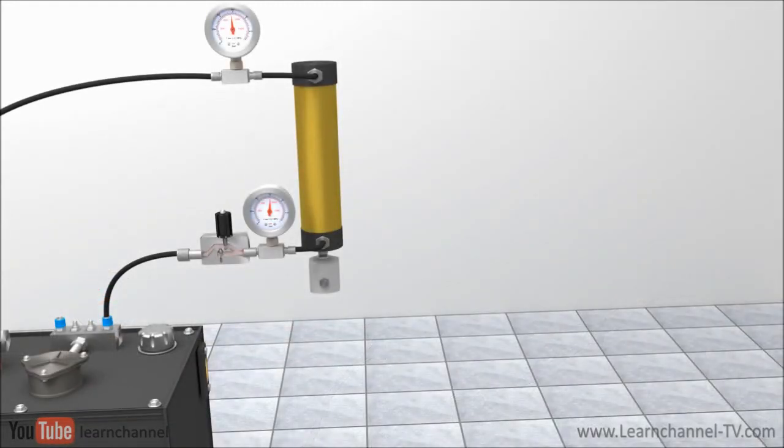To overcome this risk, we place the flow control valve at the outlet of the cylinder. We call this method meter out. Now pressure is built up at the outlet side of the cylinder and even negative load can hold.